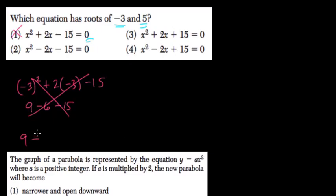So that's not a root. And the next one, x squared, so we have 9 minus 2 times negative 3, so it's plus 6 minus 15. That does equal 0.